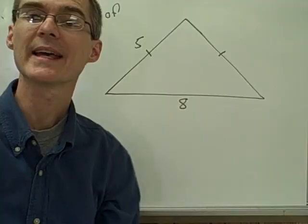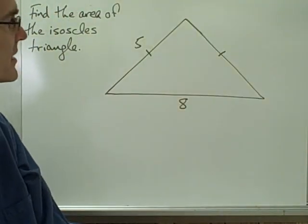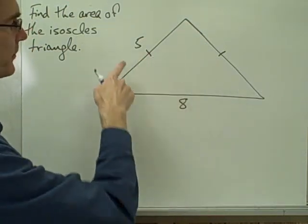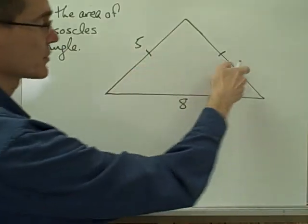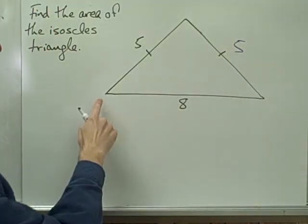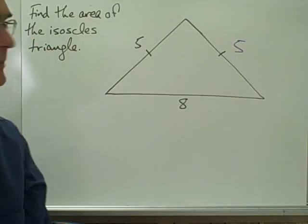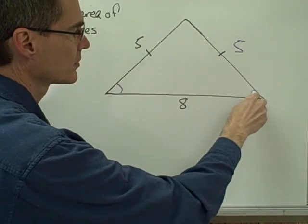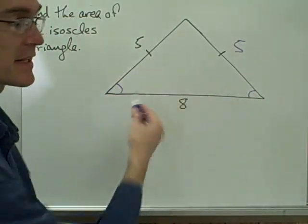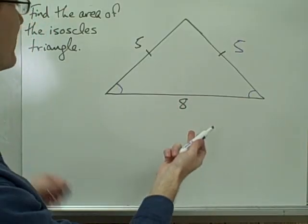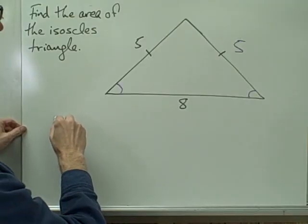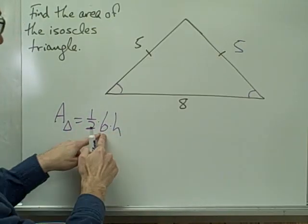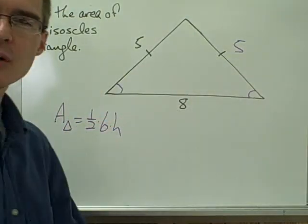Let's take a look at this example involving an isosceles triangle: find the area of the isosceles triangle. Here are my two congruent sides, and I'm told the length of each is 5. The base is 8. I also know that the base angles are congruent. Once again, I'm faced with finding the area — one-half times base times height — I know the base is 8, but I don't know the height.